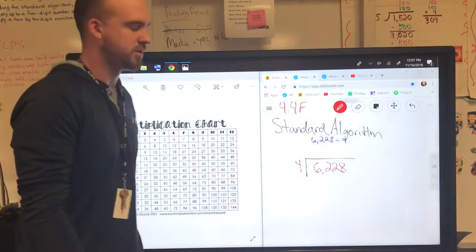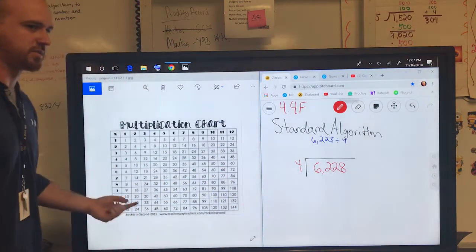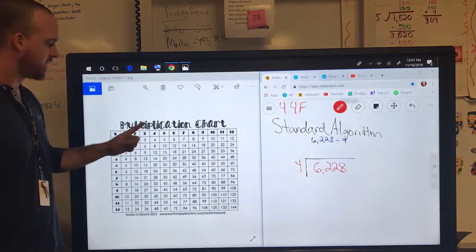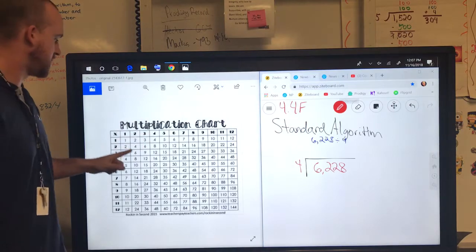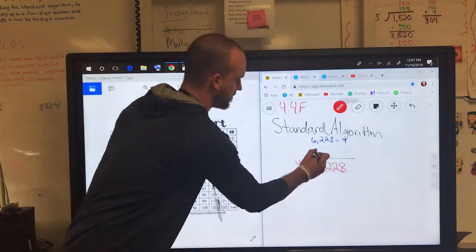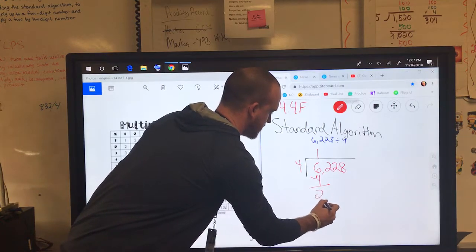The first question I ask my students is, how many times can I skip count by 4 to get close to 6? So I use my multiplication chart right here, and I skip count by 4. 4, 8, well 8 is too much. So I go back to the 4, and I look to the left and that was one time. I put the 1 on top, I subtract 6 minus 4, and I get 2.